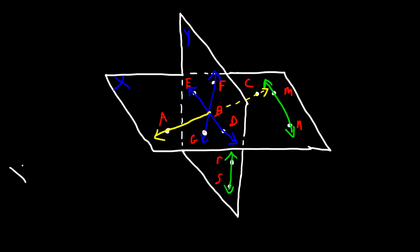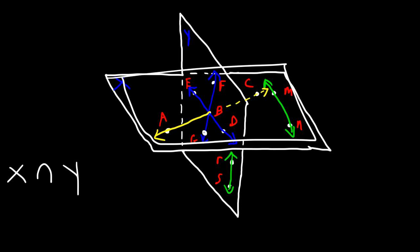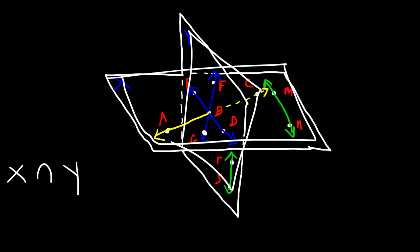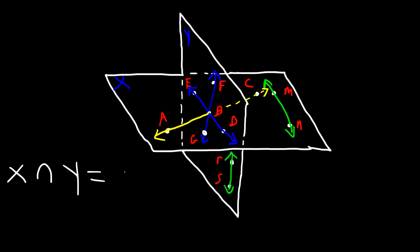What is the intersection of plane X and plane Y? The intersection between two planes is a line. Notice that line ED is found at the intersection of these two planes, so the answer is line ED.